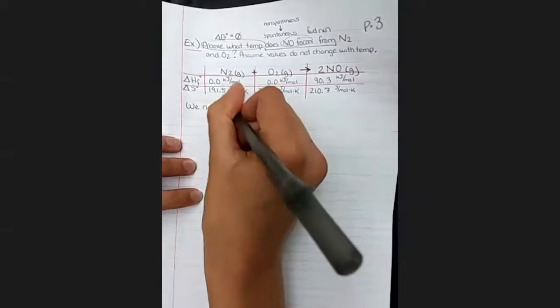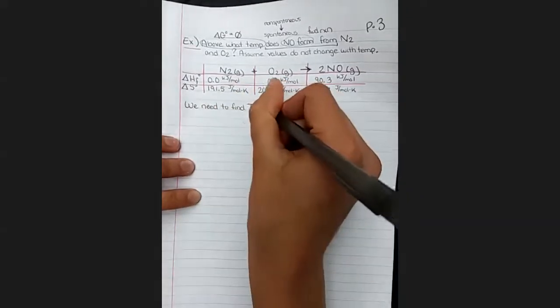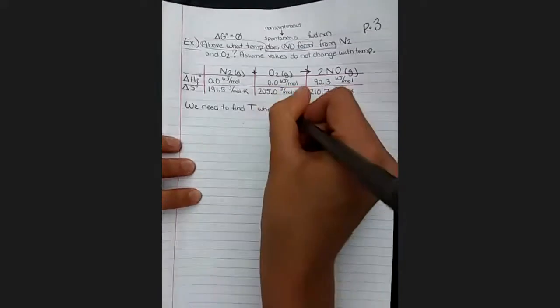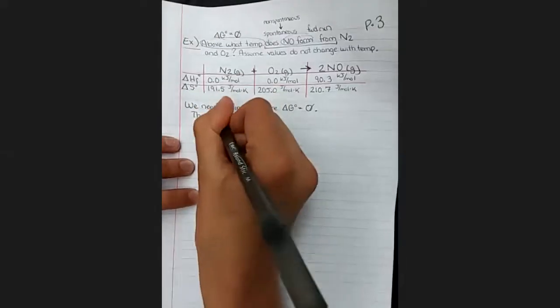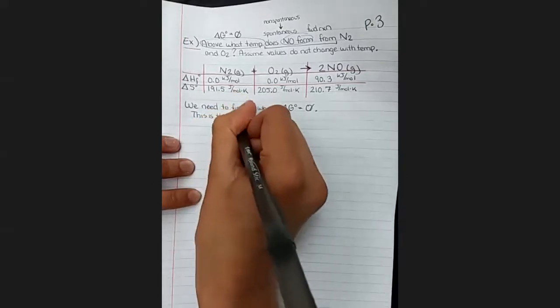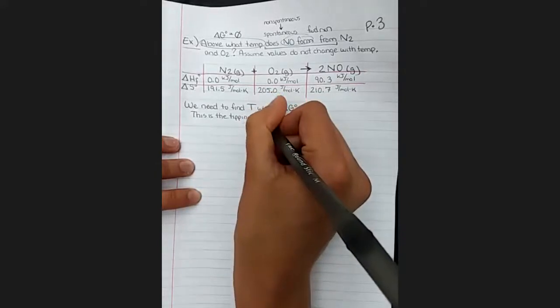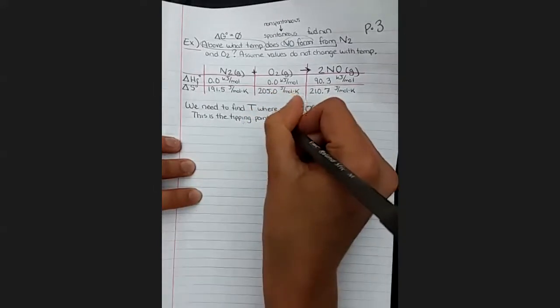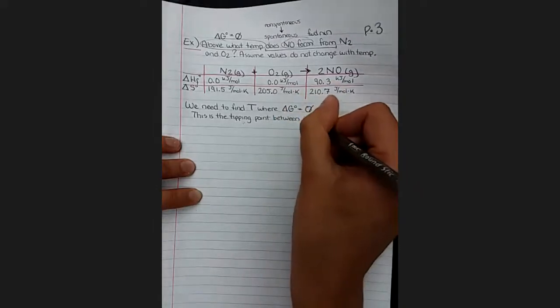So we need to find the temperature for the standard change in Gibbs free energy equals zero. This is the tipping point between spontaneous conditions and non-spontaneous conditions.